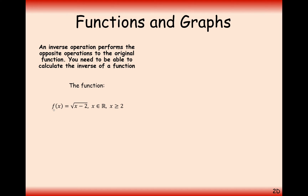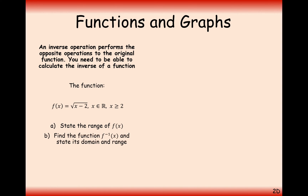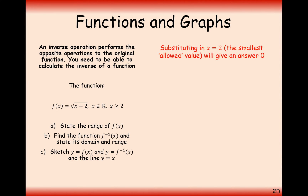Next question: the function f of x equals the square root of x minus 2, where x is any real number but x has to be greater than or equal to 2. Otherwise, if x were 1 for example, we'd have a negative inside our square root, which we cannot do in real numbers. State the range of f of x, find the function f inverse, state its domain and range, and sketch the graphs and the line y equals x.